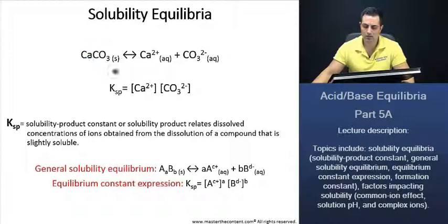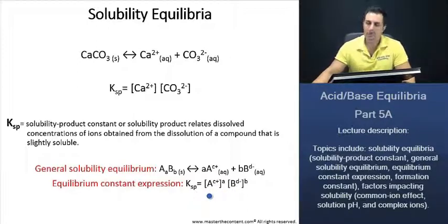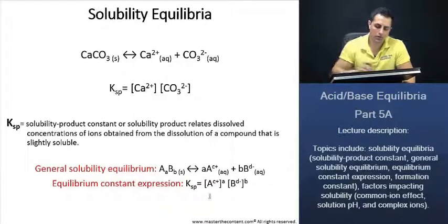So here's our compound that is slightly soluble. If we just widen the scope a little bit, we see here that the general solubility equilibrium is as follows. And from that, we get our equilibrium constant expression, which is as follows. Now let's get some practice in by doing some examples.